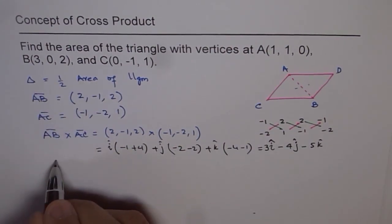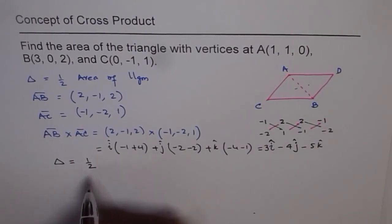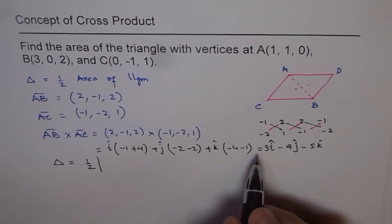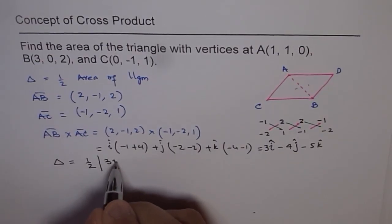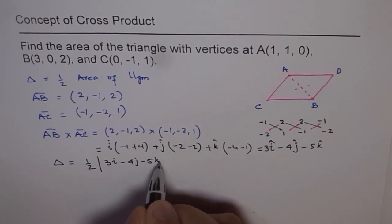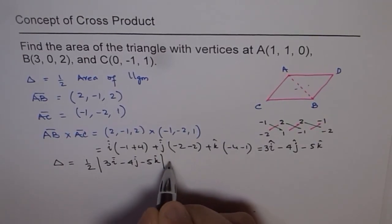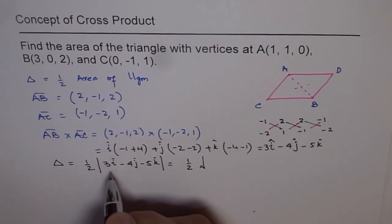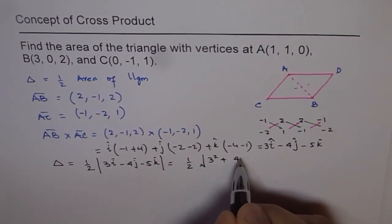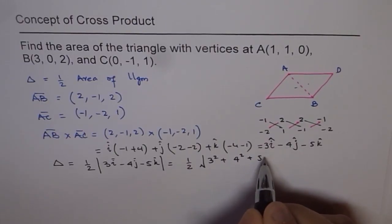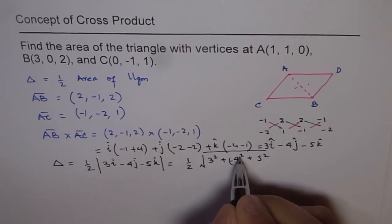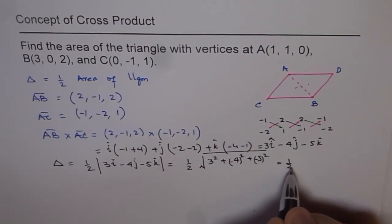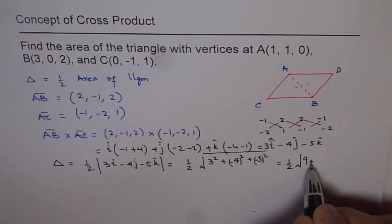Now what is the magnitude of AB? So actually the area of triangle will be half of the magnitude of the cross product, which is magnitude of this. So magnitude of 3i minus 4j minus 5k. So that is your area. So this is equal to half times the magnitude, which is square root of 3 squared plus 4 squared plus 5 squared. Strictly speaking, I should write minus within brackets, and it becomes positive.